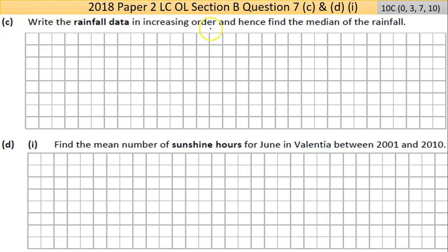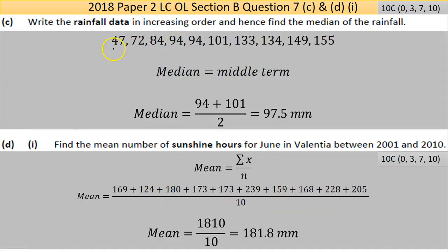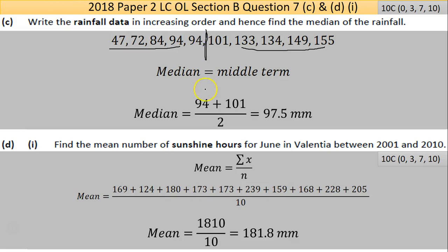Part C says: write the rainfall data in increasing order and hence find the median. Once the data is arranged in increasing order, look for the middle number. There are four numbers below 94 and four numbers above, so there's no single middle number. We take the mean of 94 and 101 — add them together and divide by two — giving a median of 97.5 millimeters.